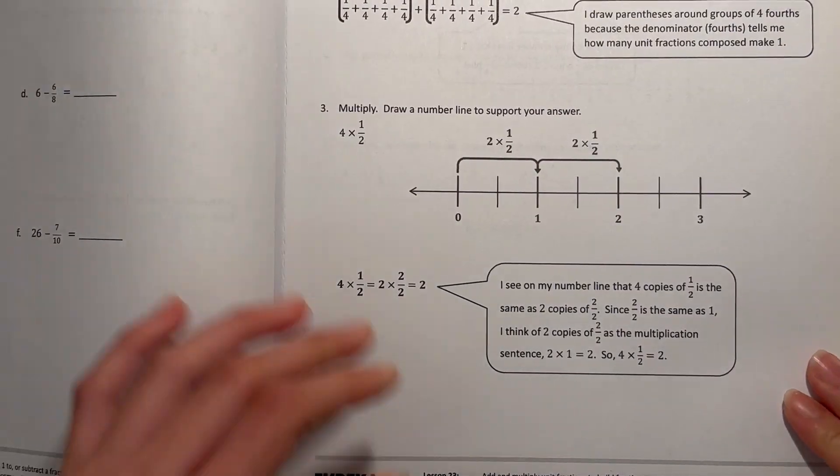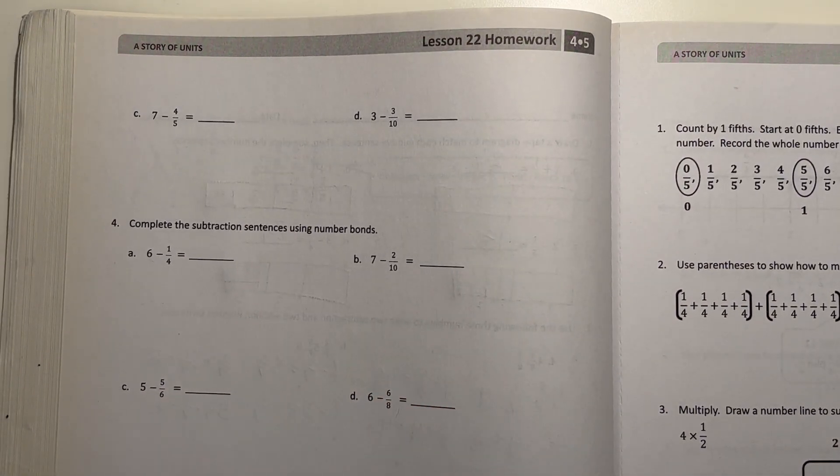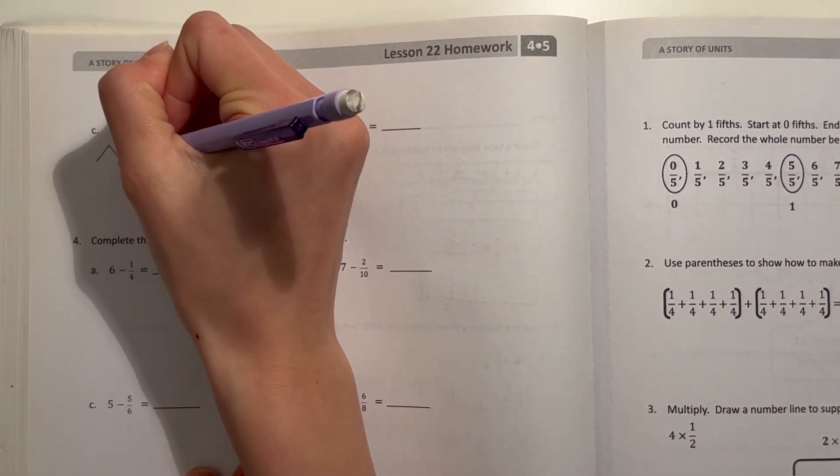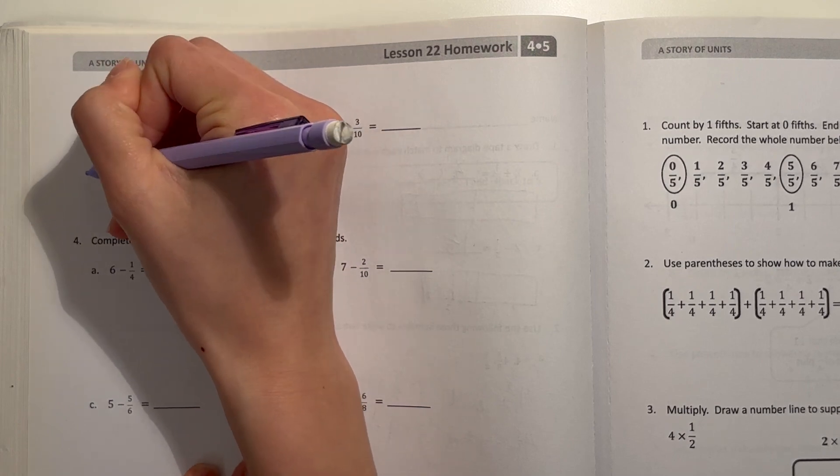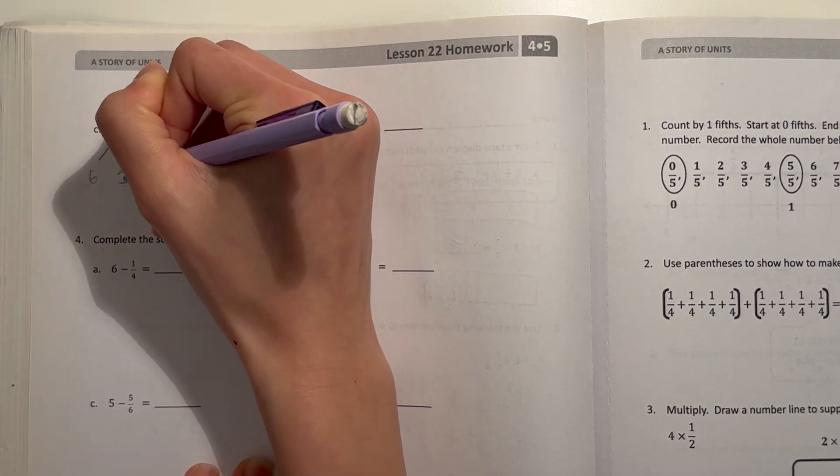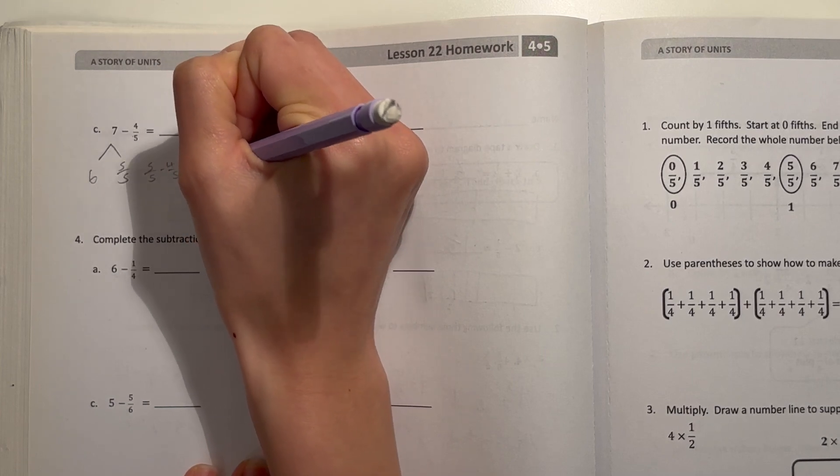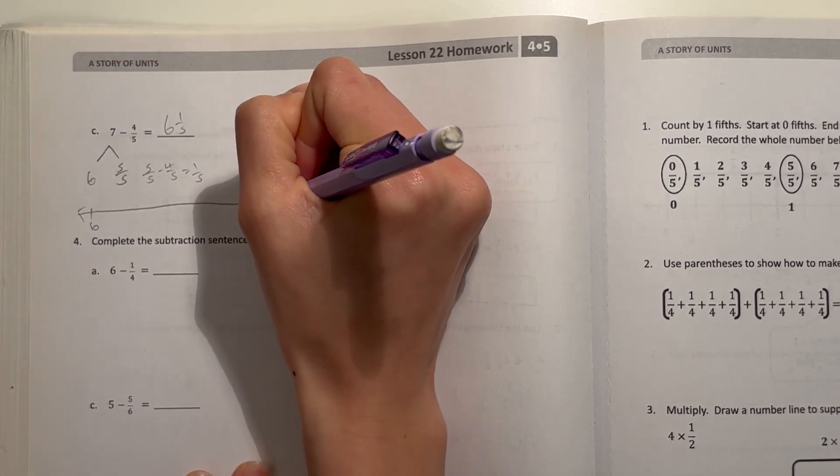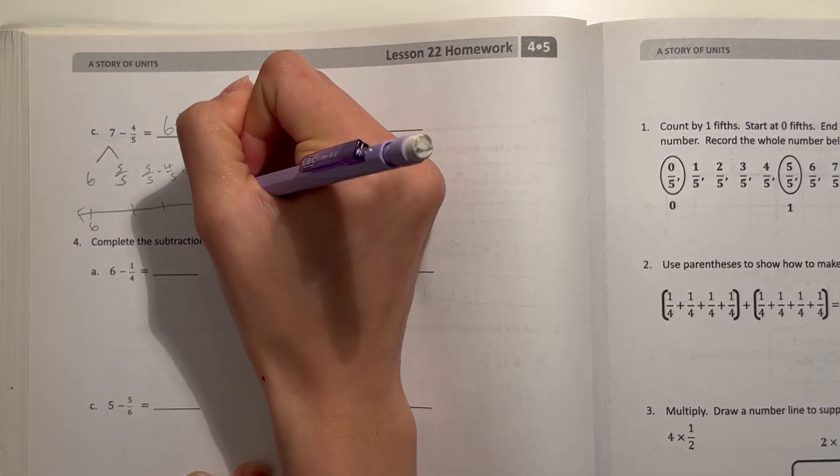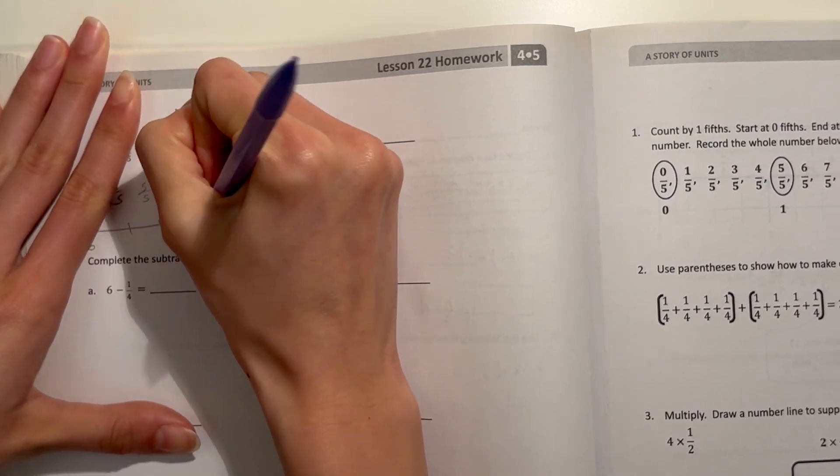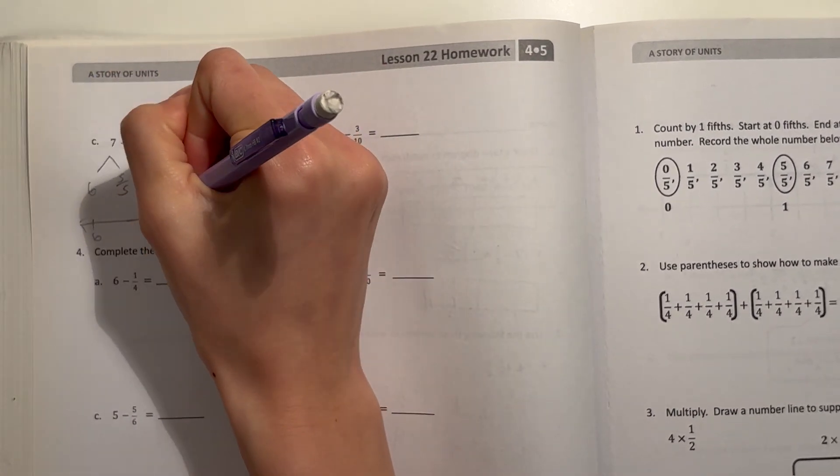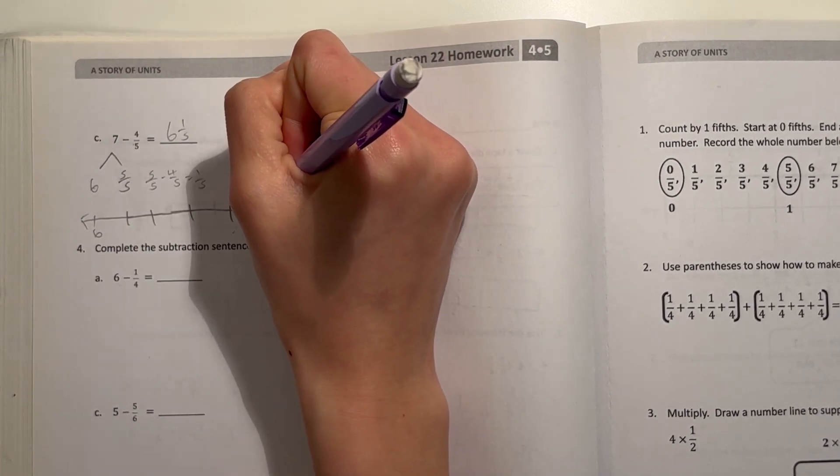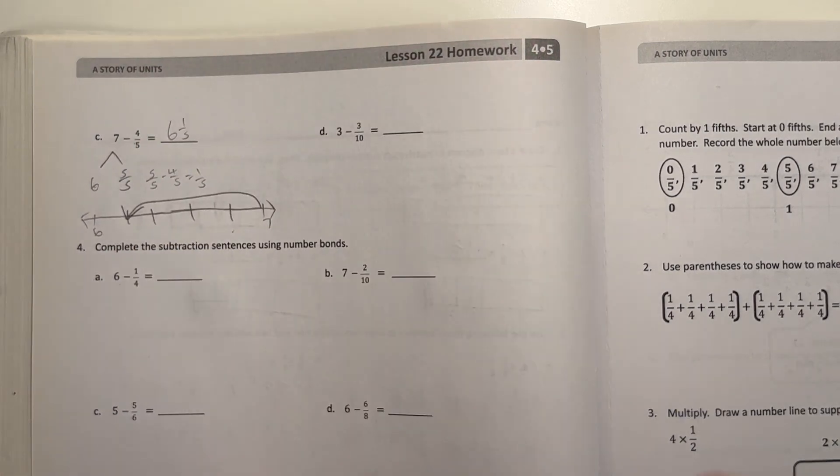All right, next page. C, 7 minus 4 fifths. So first, I'm going to take out 5 fifths, that's the denominator, and that'll give us 6 left. Now, 5 fifths minus 4 fifths is 1 fifth, so that's 6 and 1 fifth. Now, number line. So this is 7 minus 4 fifths. So it's in there.